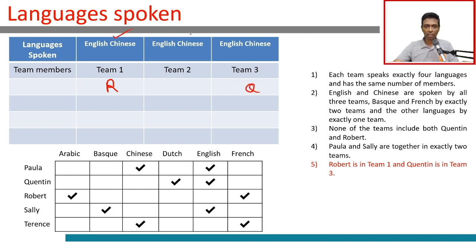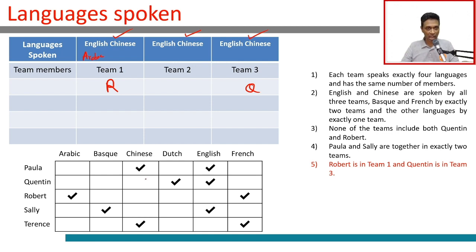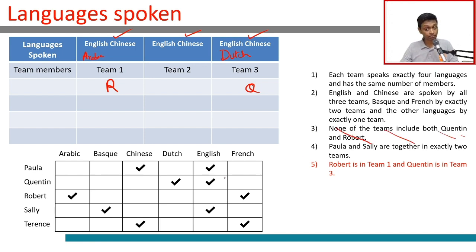All 3 teams speak English and Chinese. Robert speaks Arabic, so team 1 will speak Arabic. Nobody else speaks Arabic, and Arabic is spoken by only one team, so Robert can be in only one team — team 1. Likewise, Quentin speaks Dutch, and Dutch is spoken by only one team, so Quentin can be in no other team. The constraint that no team includes both Quentin and Robert is thus superfluous.